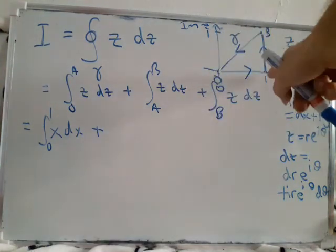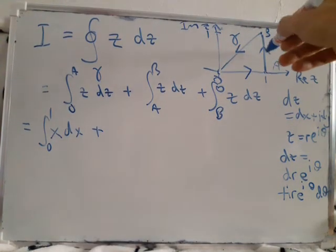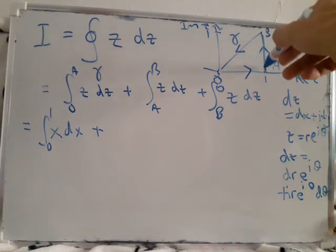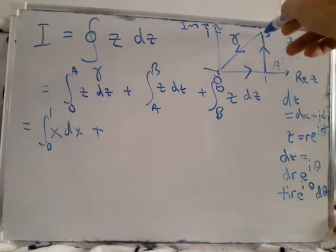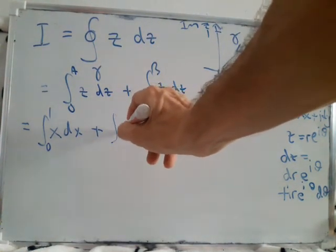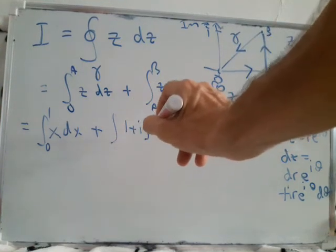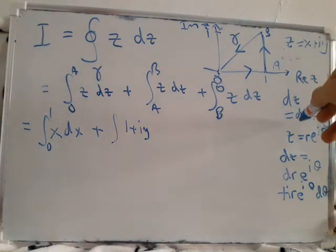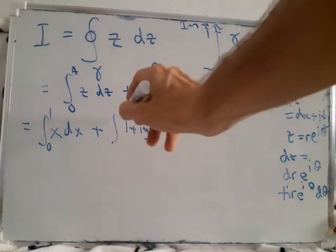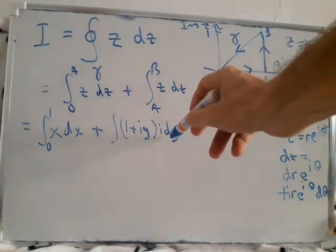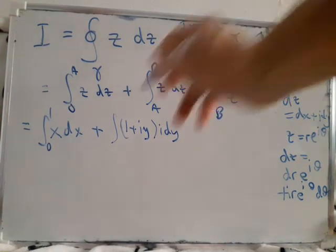So the next integral: here, z is 1 plus iy. x is fixed at 1, and z equals 1 plus iy along here. What about dz? x is not changing, so we've just got i dy. And y, our integration variable, is varying from 0 to 1.